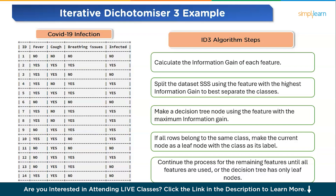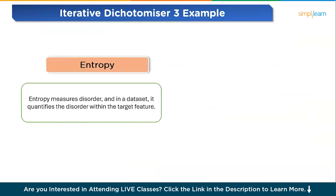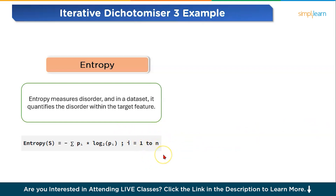To calculate the best features in the ID3 algorithm, we have two main factors to consider. The first is entropy. Entropy measures disorder in a dataset — it quantifies the disorder within the target feature. In the case of binary classification where the target column has only two types of classes, entropy is 0 if all values in the target column are homogeneous, and will be 1 if the target column has an equal number of values for both classes. Entropy is calculated for our dataset where n is the total number of classes in the target column — in our case n equals 2, that is yes or no. Here, pi is the probability of class i, or the ratio of rows with class i to the total number of rows.